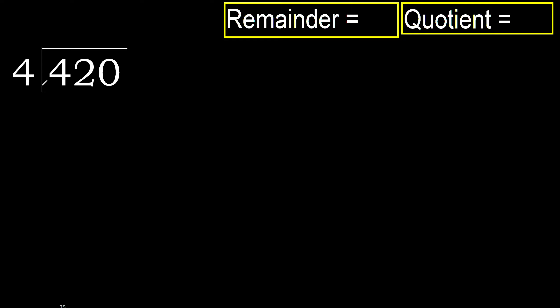420 divided by 4. 4 is not less, therefore we work with 4. 4 multiplied by which number is nearest to 4, but not greater.